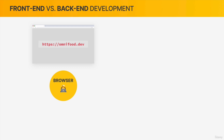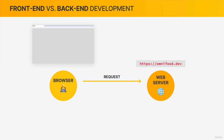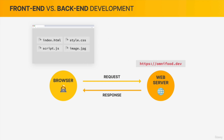What happens when we try to access this page is that our browser will send a request to the server where this page is hosted on the Internet. Each and every website is stored on something called a server, which is basically a computer connected to the Internet that is able to receive requests like this one. When we browse to a certain website, our web browser sends a request to the server where the website is hosted. Then when the server receives the request, it takes all the files that make up the website and sends them back to the browser as a response. Those files include HTML, CSS, and also JavaScript code.